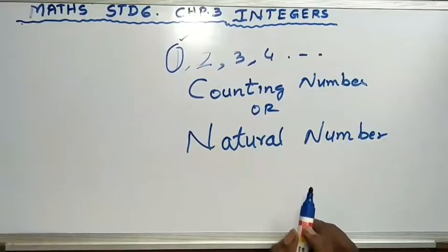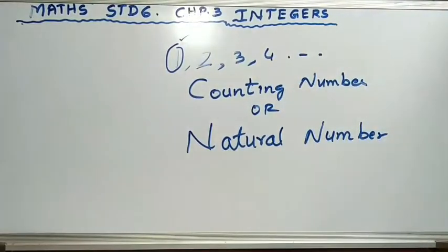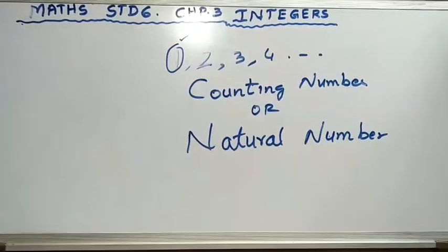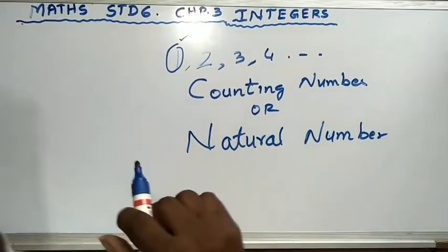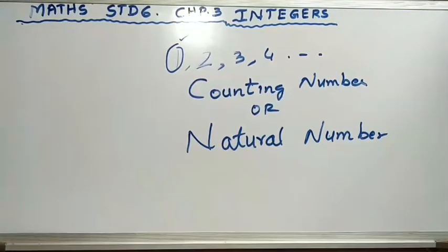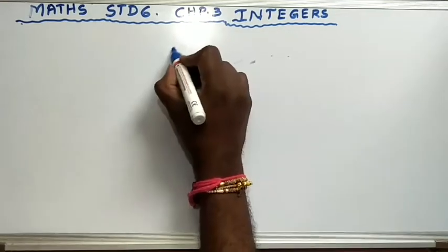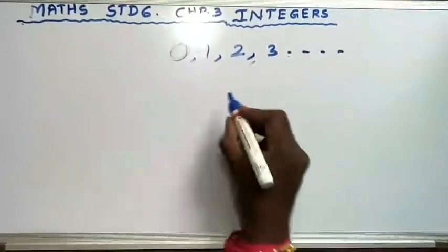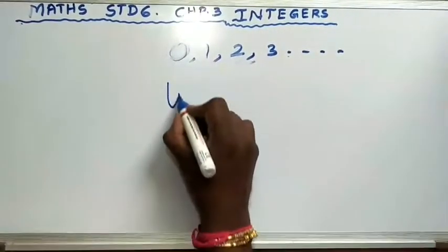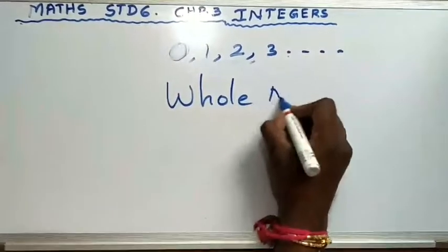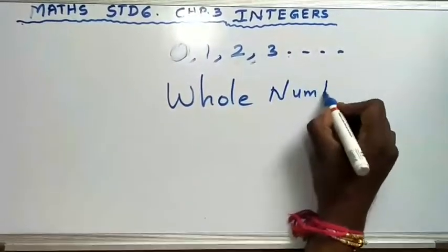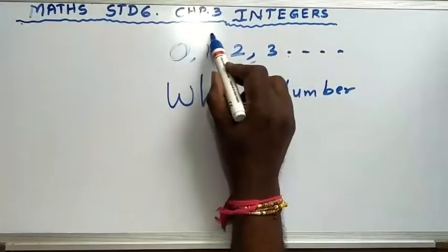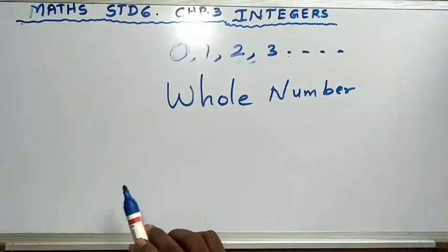The smallest natural number is 1 and the biggest natural number is infinity — we cannot say which is the biggest natural number or where the numbers end. These are the numbers we call counting numbers or natural numbers. Now there are other numbers which start from 0: 0, 1, 2, 3, and so on. These numbers are called whole numbers. Natural numbers start from 1, but whole numbers start from 0.